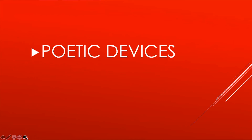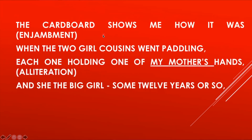Now I will discuss the poetic devices, which are very important and questions on these certainly come in your exams. First, enjambment: when one sentence spills to the next line and there is no punctuation mark at the end of the line, it is called enjambment. For example, 'The cardboard shows me how it was' — there is no punctuation mark and the sentence continues to the next line: 'when the two girl cousins went paddling.'